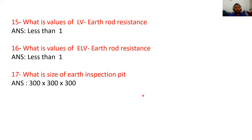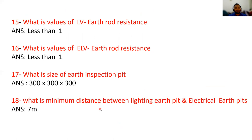The size of the earth pit is 300 mm × 300 mm × 300 mm. The minimum distance between the lightning earth pit and the electrical earth pit shall be 7 meters.